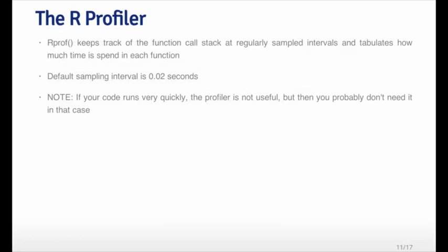The RProf function keeps track of the function call stack at regularly sampled intervals. As your function is running, it queries the function call stack — how many functions call other functions that call other functions — and it prints that out. All it does is print out the function call stack at very quick intervals, about every 0.02 seconds.